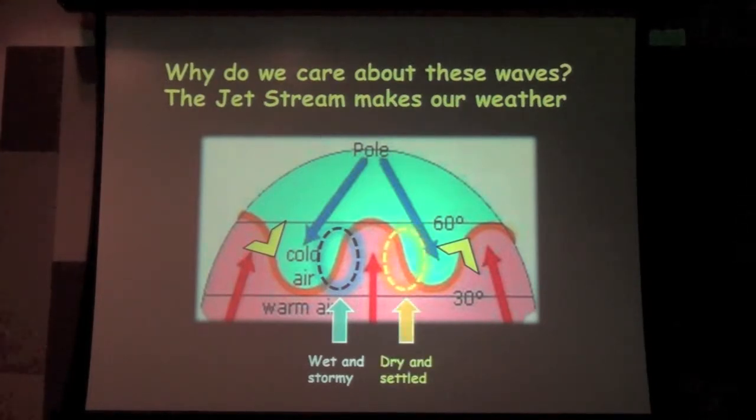But if you're in this part of the jet stream, which is what we have today, we have very dry and subtle conditions. Depending on where you are relative to these waves in the jet stream determines what your weather is that you're experiencing down the surface. So that looks very neat and tidy and kind of easy to understand. But now let's look at the real jet stream.